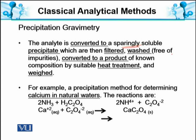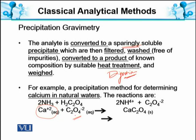Then converted to a product of known composition by suitable heat treatment — اس heat treatment کو gravimetric analysis میں digestion بھی کہتے ہیں۔ ایک مثال: calcium کا analysis natural water میں کرنا ہو تو ammonia کو oxalic acid کے ساتھ treat کریں گے جس سے ammonium oxalate بنے گا، اور calcium — جو ہمارا analyte ہے — اسی oxalate کے ساتھ reaction کرے گا اور calcium oxalate میں change ہوگا۔